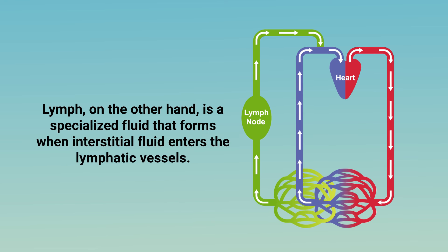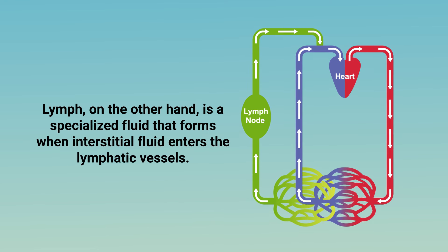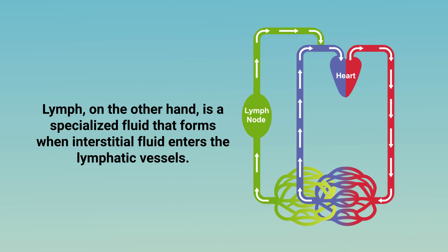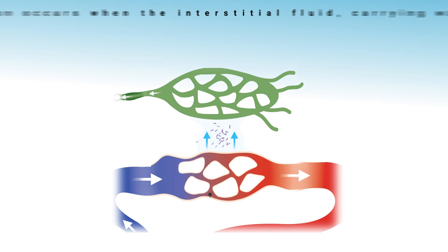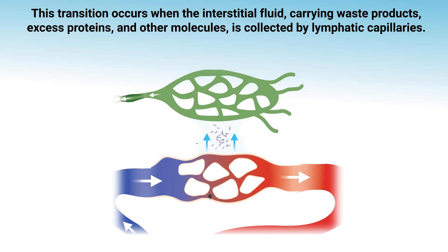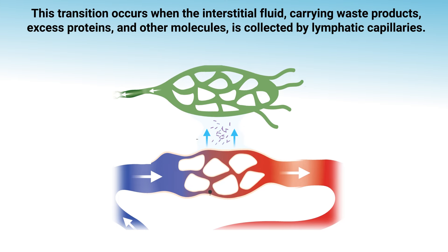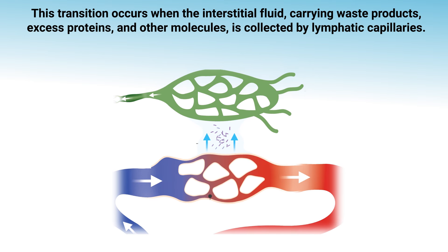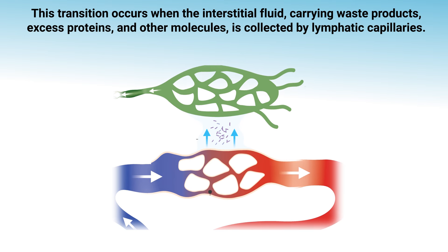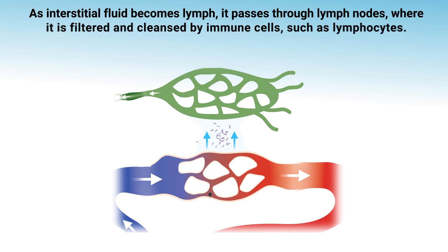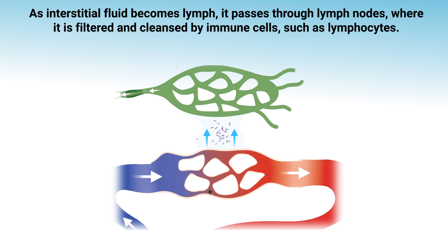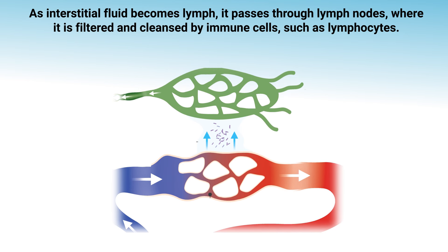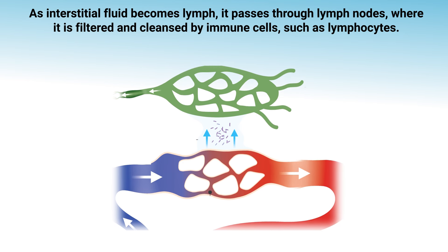Lymph, on the other hand, is a specialized fluid that forms when interstitial fluid enters the lymphatic vessels. This transition occurs when the interstitial fluid — carrying waste products, excess proteins, and other molecules — is collected by lymphatic capillaries. As interstitial fluid becomes lymph, it passes through lymph nodes where it is filtered and cleansed by immune cells, such as lymphocytes.